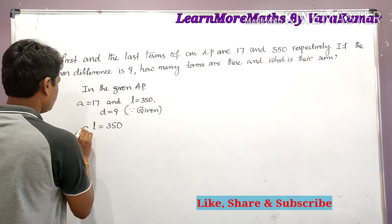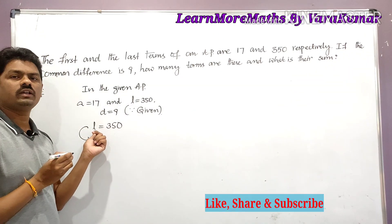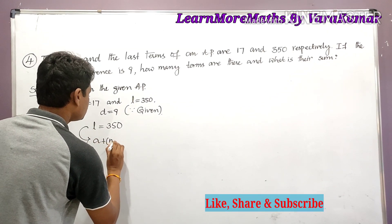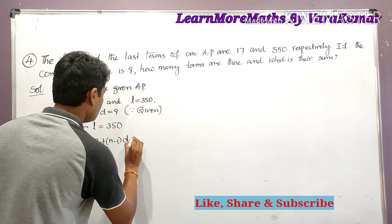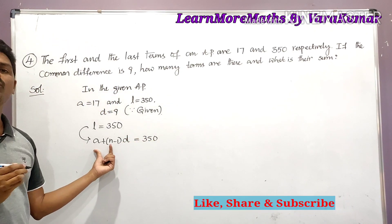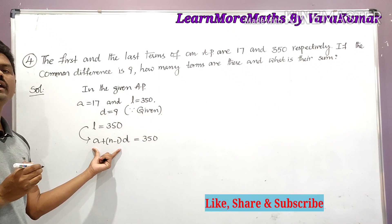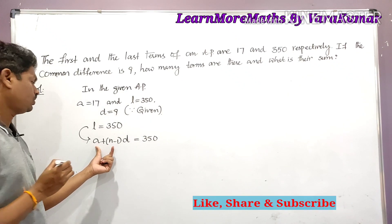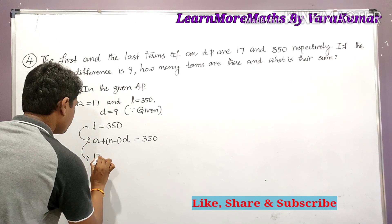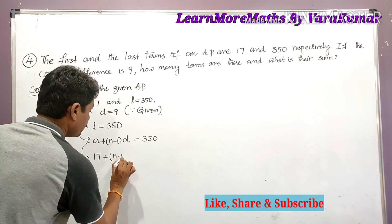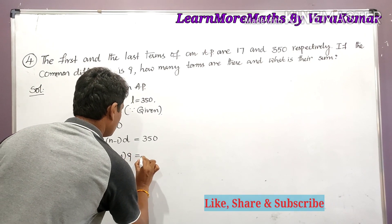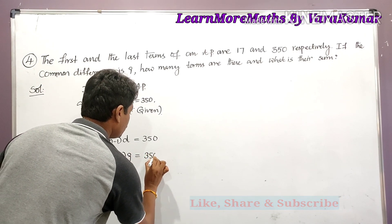The last term or nth term can be written as a + (n−1)×d. Substituting a = 17 and d = 9, we get: 17 + (n−1)×9 = 350.